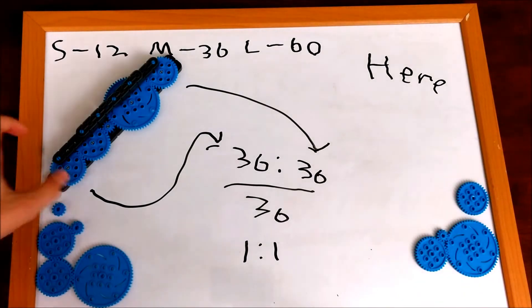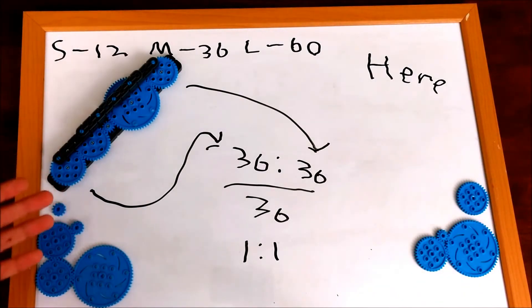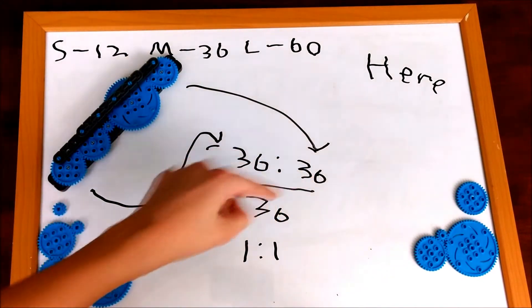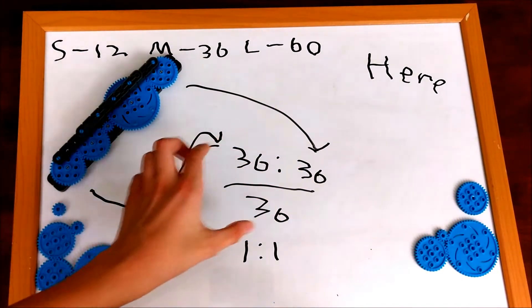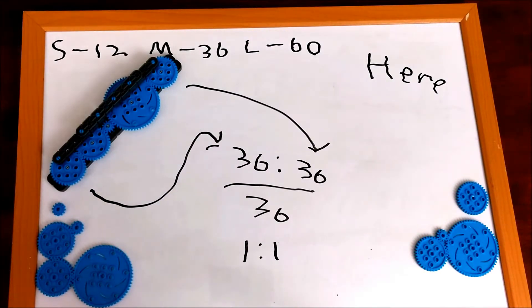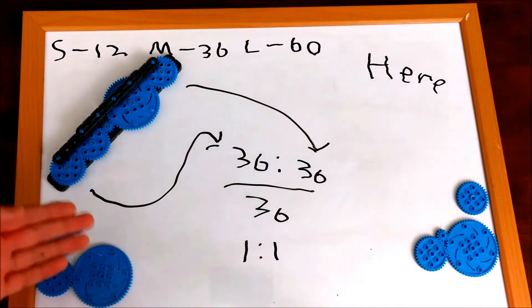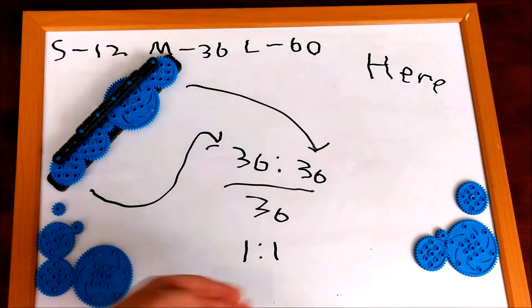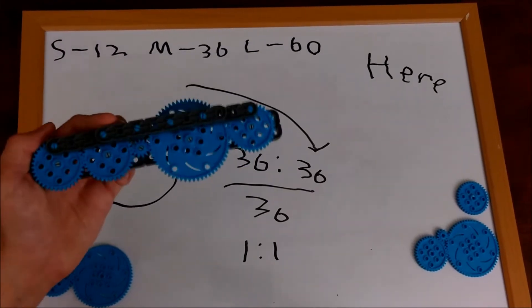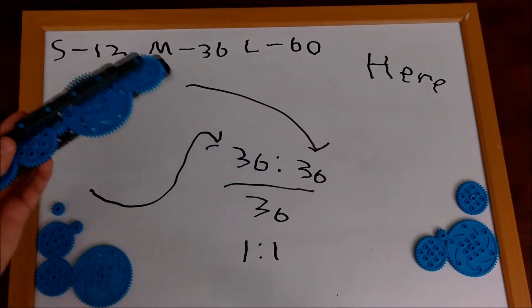Basically, you take the first gear and count the teeth, 36, and the last gear, count the teeth, 36, and then divide by the least common factor. So basically, they're both divisible by 36, so it's a 1 to 1 ratio. Which is correct for this particular gear ratio thing.